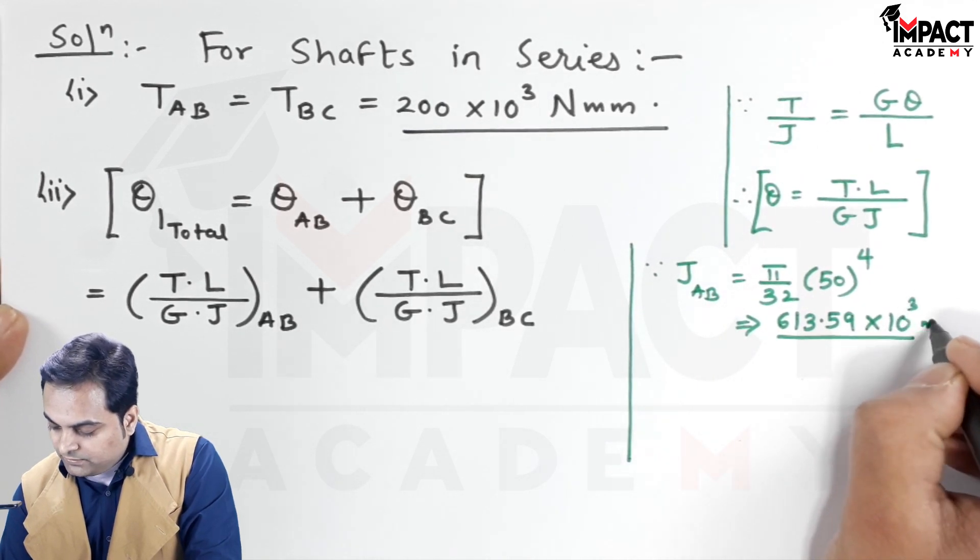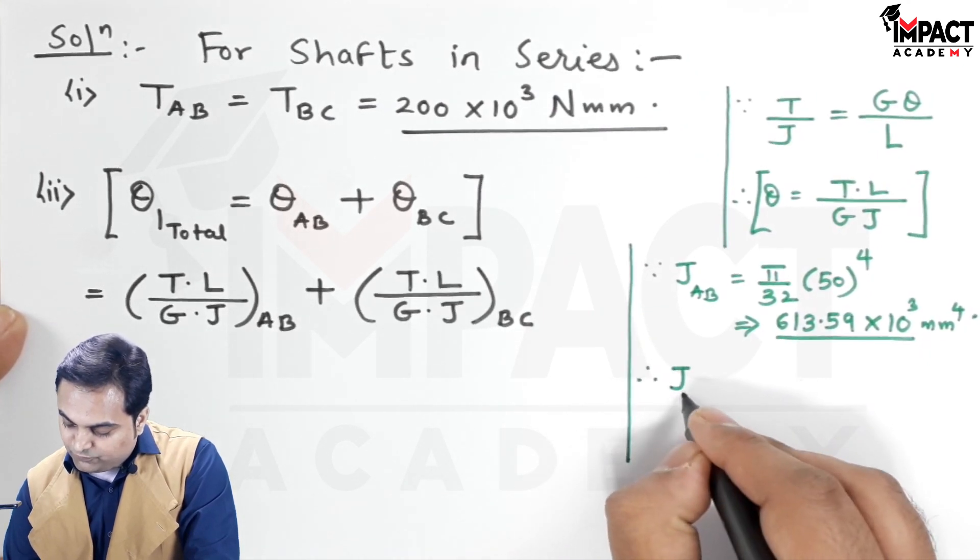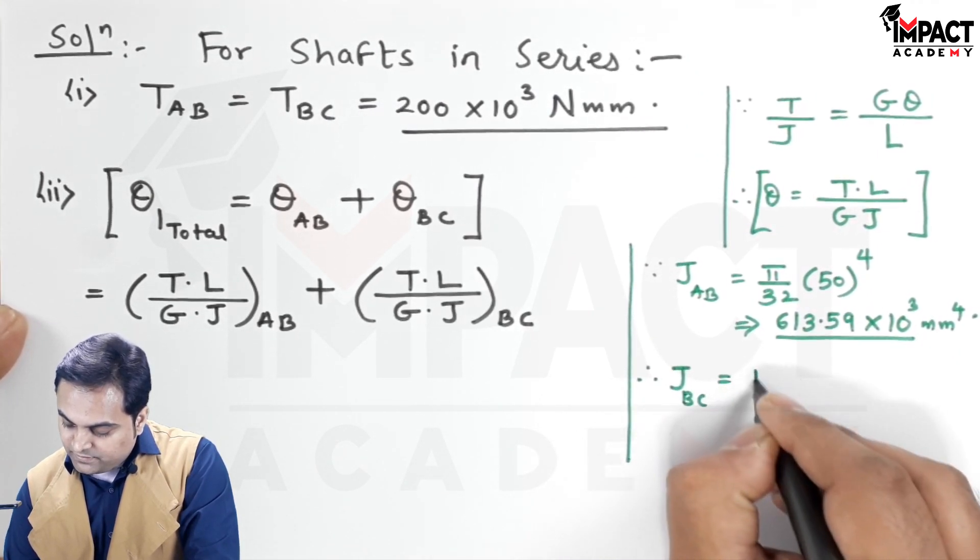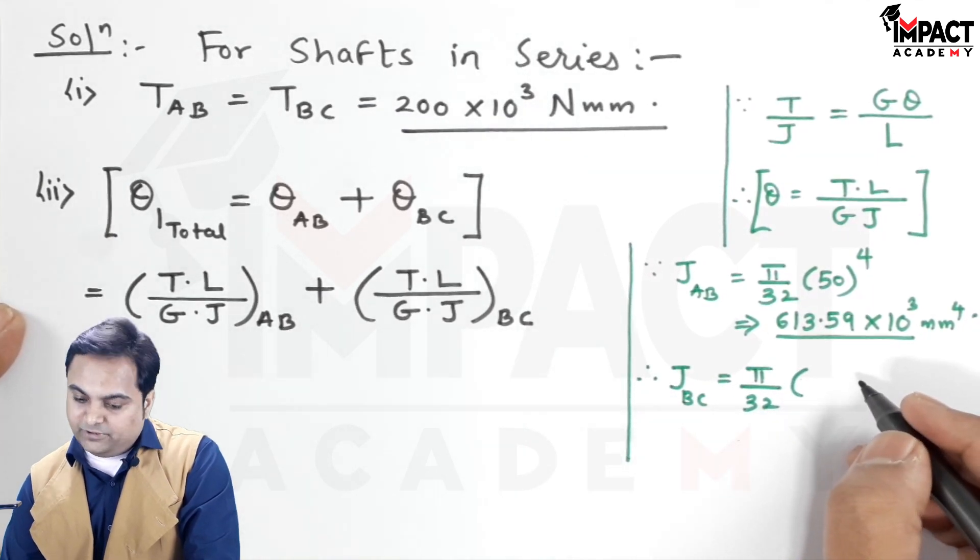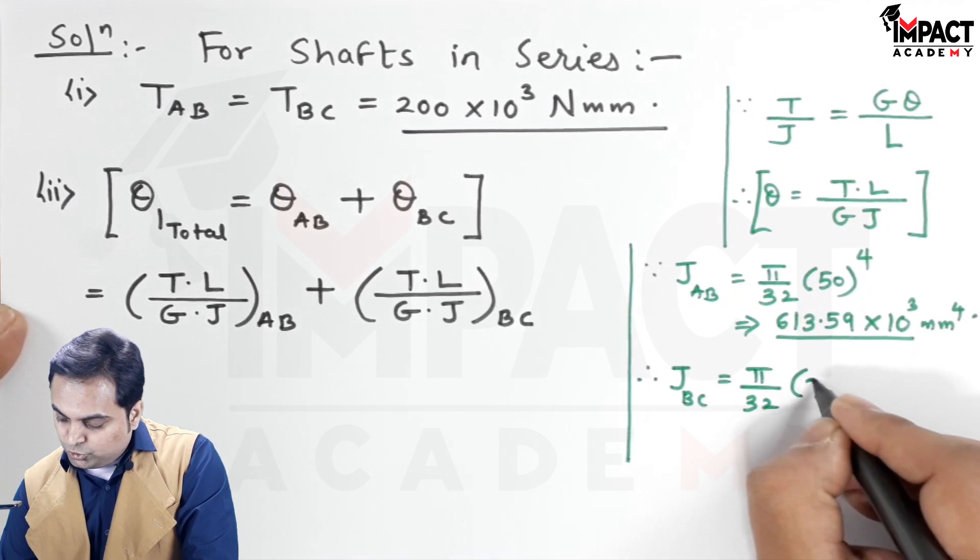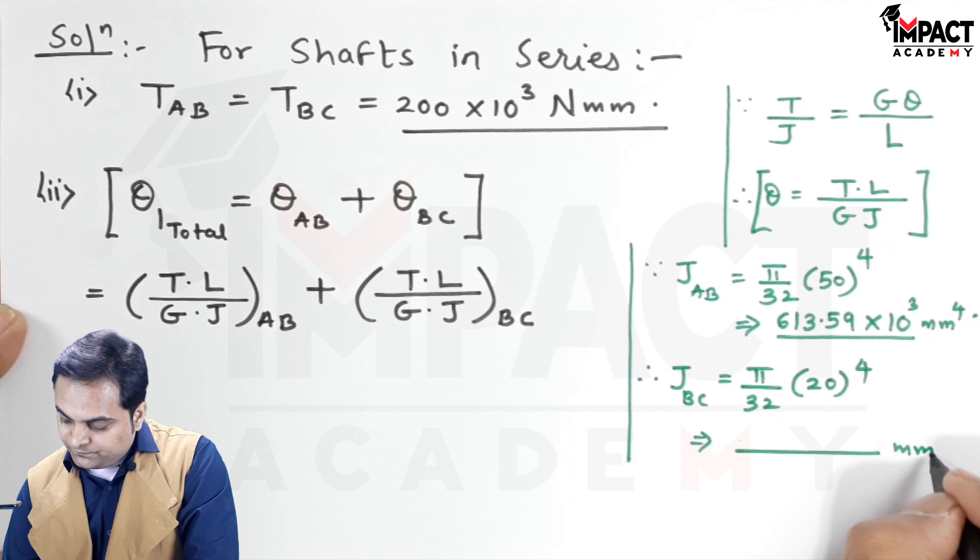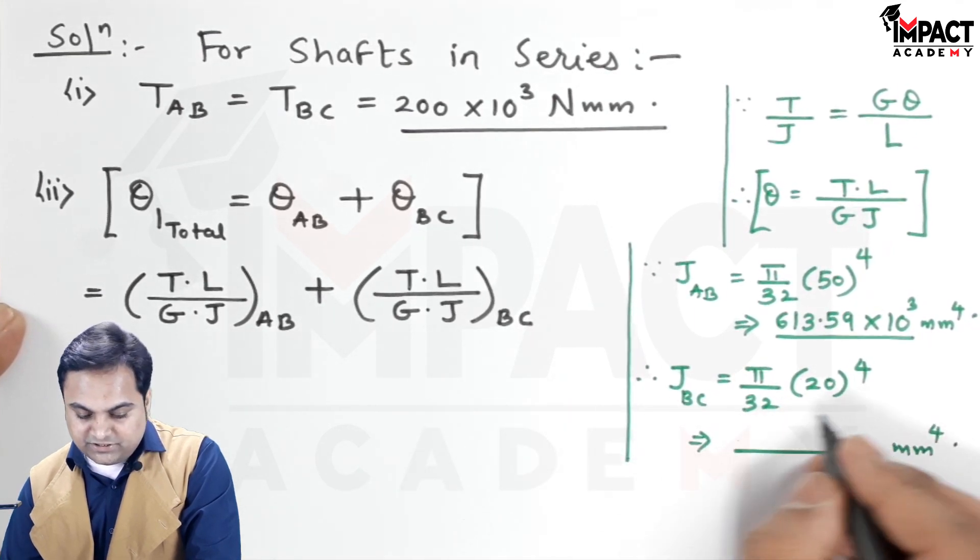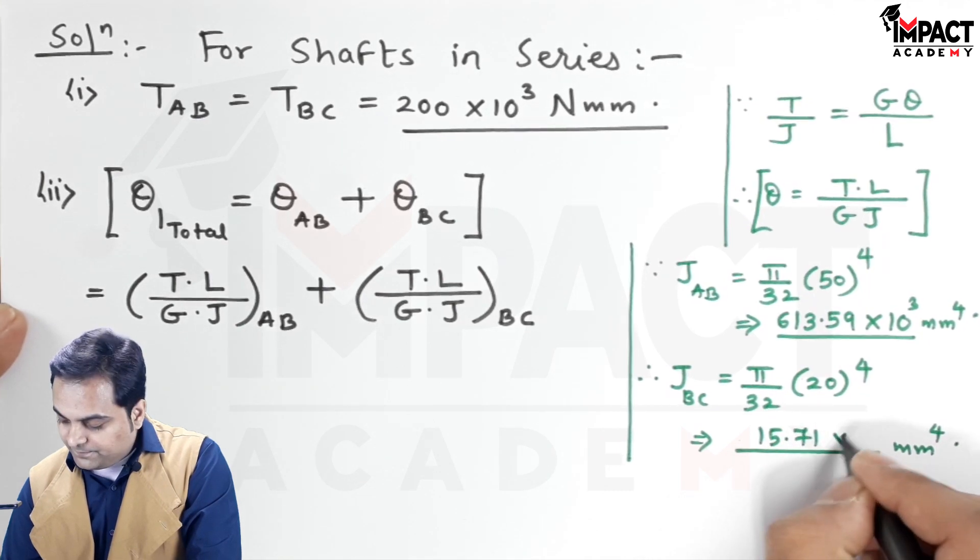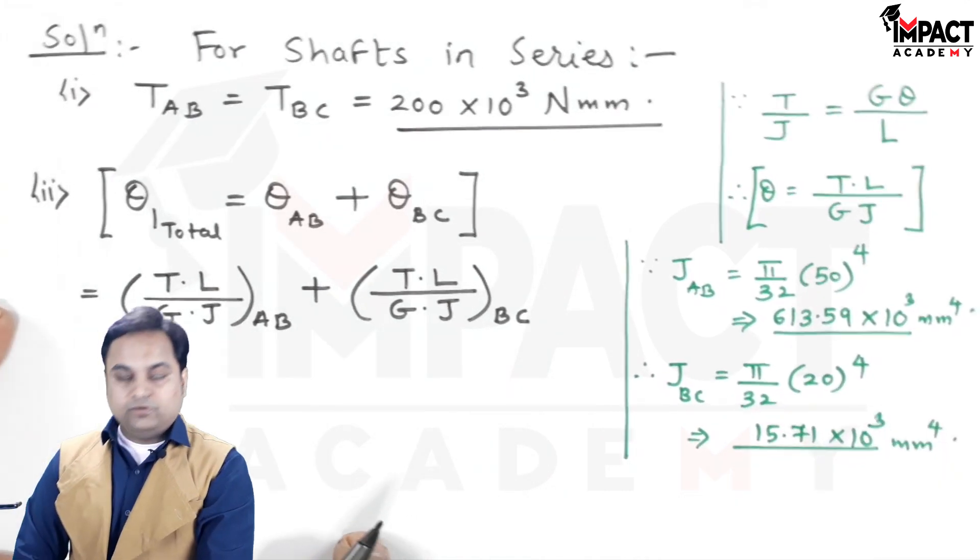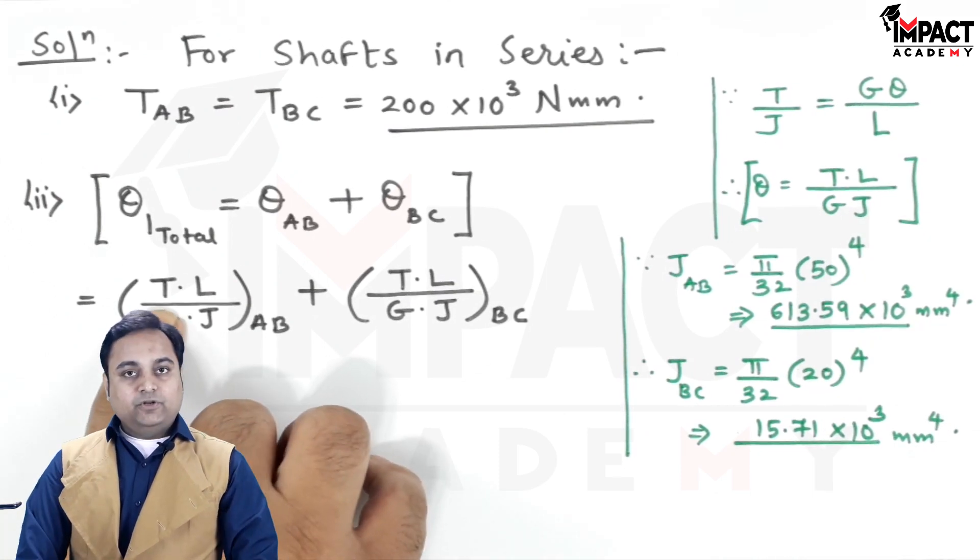J for portion BC is π/32 × D⁴, with diameter 20mm. From this, I will get J_BC = 15.71×10³ mm⁴.